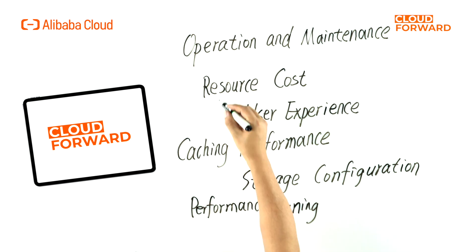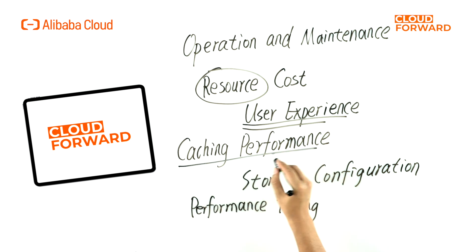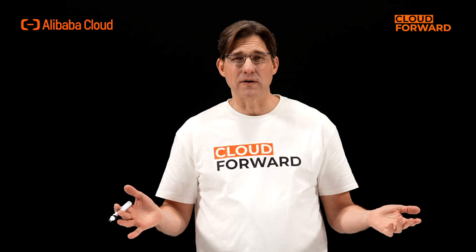Although caching can accelerate the efficiency of data access, it still faces many engineering problems in practical AI model inference scenarios, such as operation and maintenance, resource cost, user experience, caching performance, storage configuration, performance tuning, etc. For instance, how to manage the lifecycle of a caching system? How to reduce the additional computational resource cost required for caching? How is data accessed from the cache? How are cache affinity and scheduling configurations handled? How is cache data distributed? What are the cache parameter tuning strategies based on business scenarios?